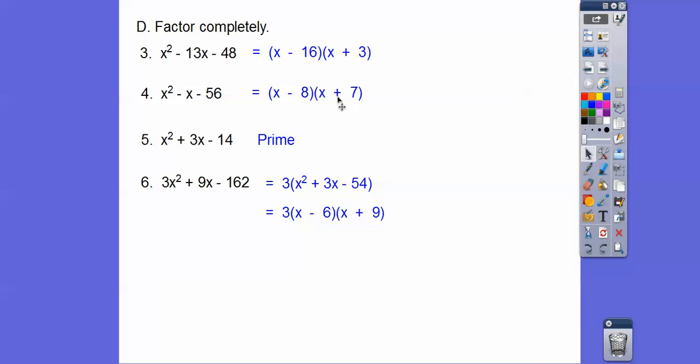Remember, if I foiled this out times this out, it would give us this. Foiled this times this, it gives us this. So factoring is the opposite of multiplying or foiling. It's asking what times what gives us these polynomials right there. That's what factoring is.